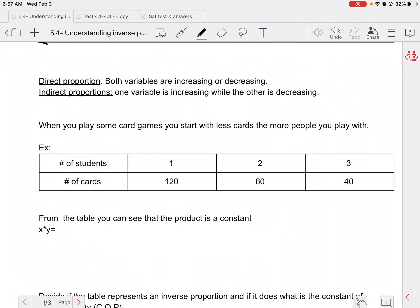Direct proportion: both variables are increasing or decreasing. Indirect proportion: one variable is increasing while the other is decreasing.